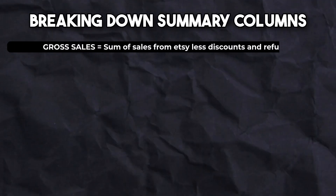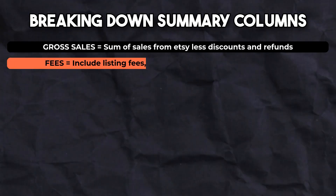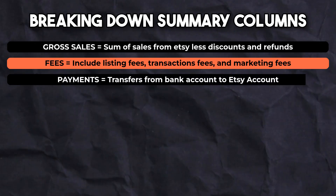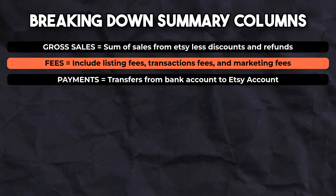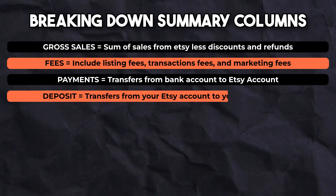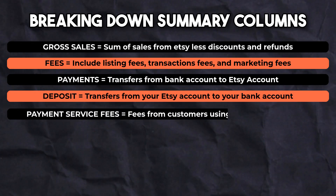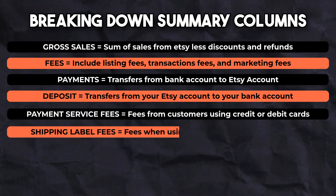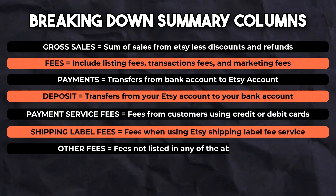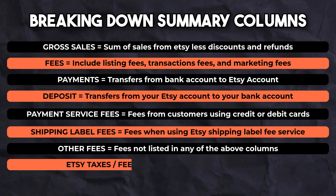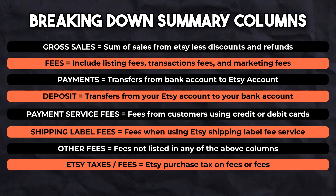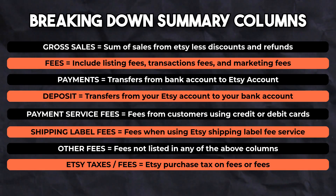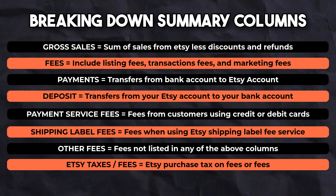The gross sales include the sum of sales you make on Etsy, less discounts and refunds. The fees column is the fees Etsy charges for listing, transactions, and marketing. Payments are transfers from your bank account to your Etsy account — this only happens if you don't have enough funds in your Etsy account to pay for fees or refunds. The deposit account represents transfers from your Etsy account into your bank account. Payment service fees are fees Etsy charges for sales paid via credit or debit. Shipping label fees are for those that use shipping labels. Other fees are any fees that may not appear in the other columns. Etsy taxes are purchase taxes Etsy charges on all their fees, based on the province or state you live in, though this could also be Etsy fees depending on your account settings and store location.